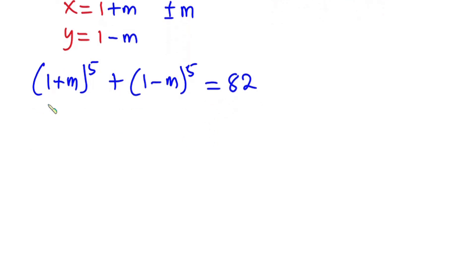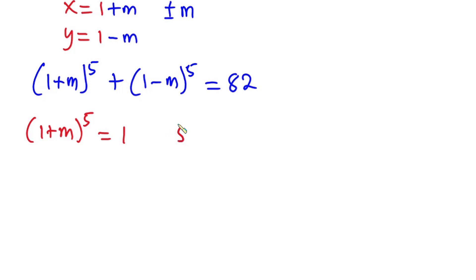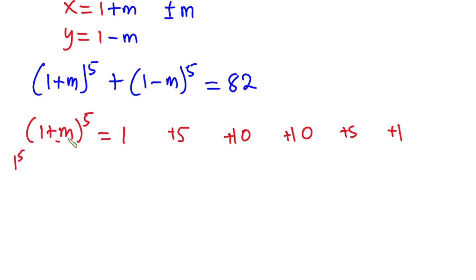Now let's use binomial expansion to expand this. Let's pick the first one: (1 + m)⁵. From Pascal's triangle the coefficients are 1, 5, 10, 10, 5, and 1. I'll introduce the addition sign between each term. The first term is 1 to the fifth power and the last is m to the fifth power. Since the base is 1, multiplying by 1 doesn't change anything, so I focus on the powers of m.